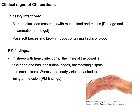Clinical signs of Chabertia ovina infection: in heavy infection, the animal suffers from marked diarrhea with a large amount of blood and mucus, due to damage of the intestinal wall. Sometimes there is passing of soft feces with brown mucus containing flecks of blood. In post-mortem findings in heavily infected sheep, the intestinal wall is very thickened, with longitudinal ridges, hemorrhagic sores, and small ulcerations on the intestinal wall. Adult parasites can also be visible on the wall of the sigmoid colon.